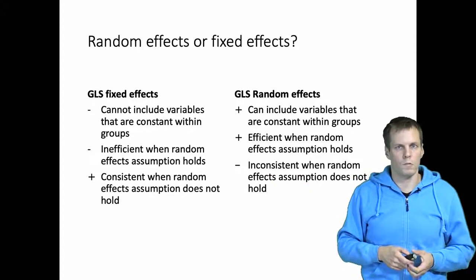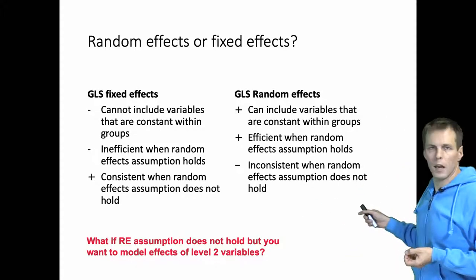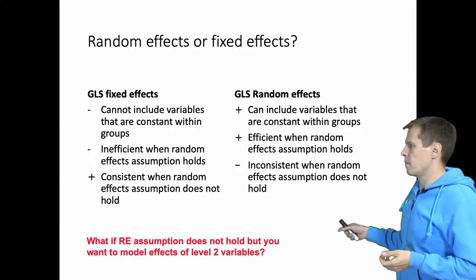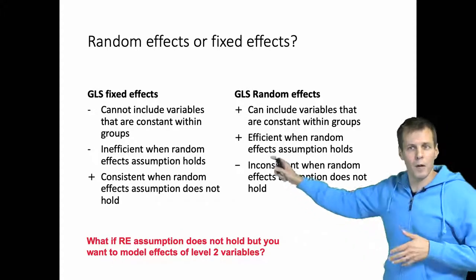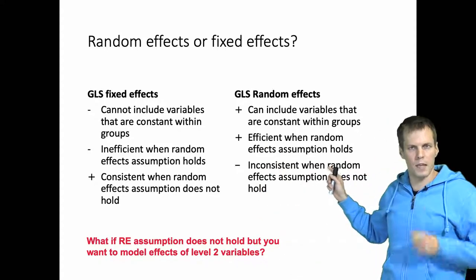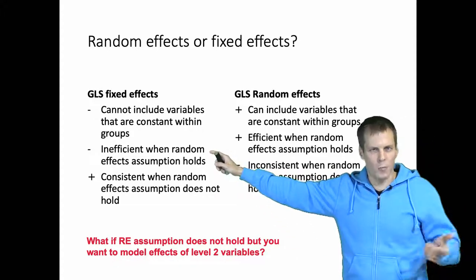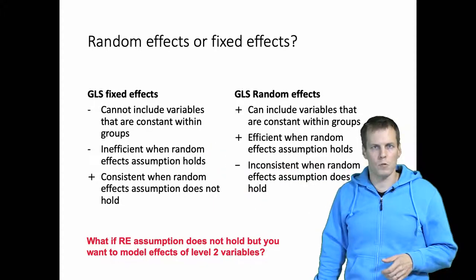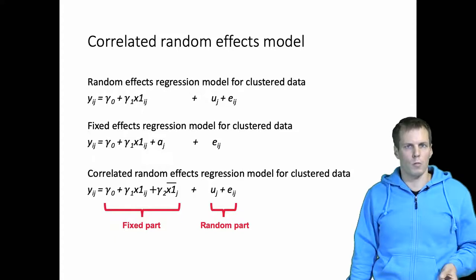If the Hausman test rejects the null hypothesis then we pick the GLS fixed effects approach. But what if we want to model the effects of level two variables but we have good reasons to believe that the random effects assumption doesn't hold? We can't just choose between these two: the GLS random effects is inconsistent under this scenario, and the GLS fixed effects approach can't model variables that are constant within clusters or level two variables. Fortunately there is a third approach called the correlated random effects model.